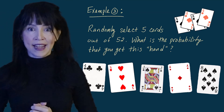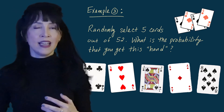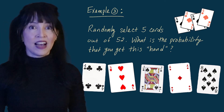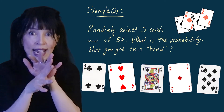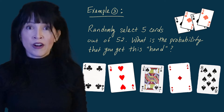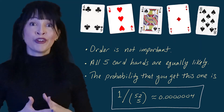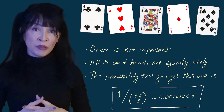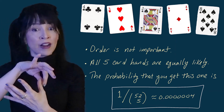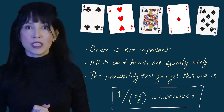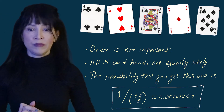In my third example, I take the well-shuffled deck, randomly select five cards, and want the probability of getting this particular hand: the four of clubs, three of hearts, jack of spades, ace of diamonds, and eight of spades. There's only one way to get that hand, and order is not important. So this is one out of the total number of ways to grab five cards — a combination — which is 52 choose five, giving approximately 0.000004.